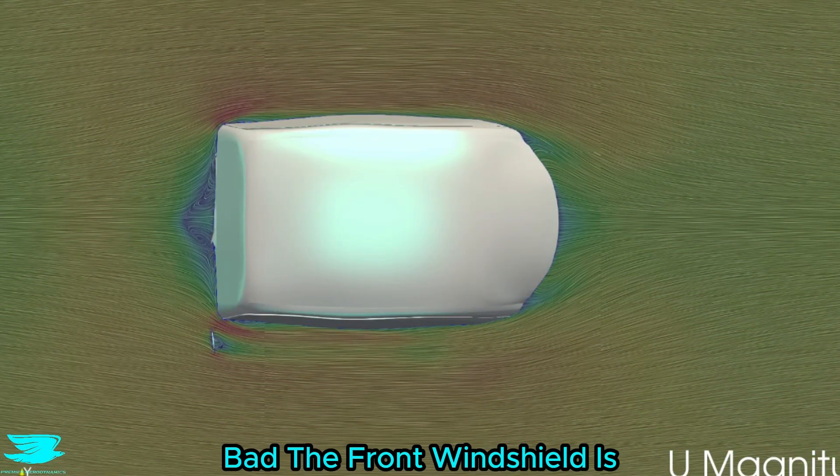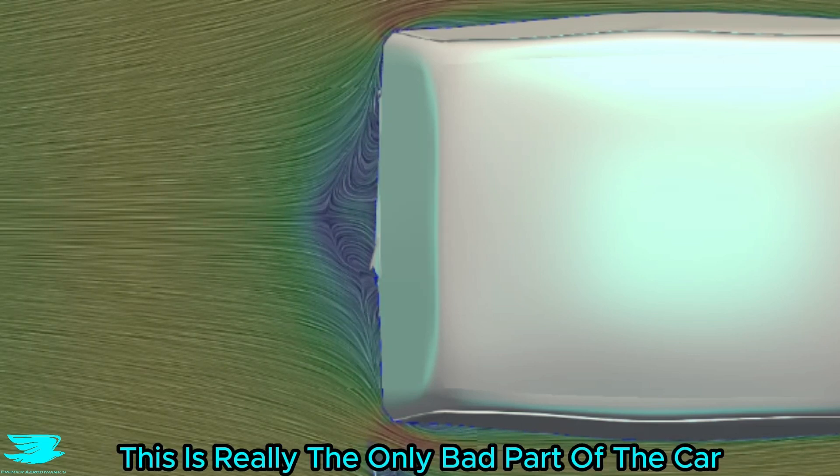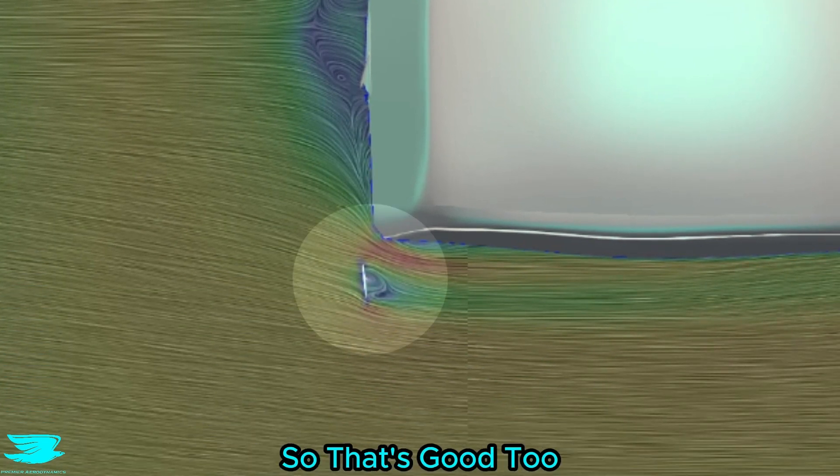Looking higher up, we can see just how bad the front windshield is, with so much flow crashing into it, and a very large recirculation zone forming. This is really the only bad part of the car. Everything else seems either pretty good, or really good, and having only one side mirror cuts down the wake a little, so that's good too.